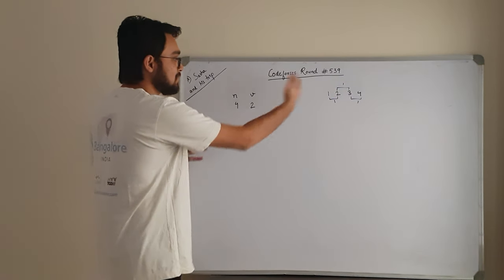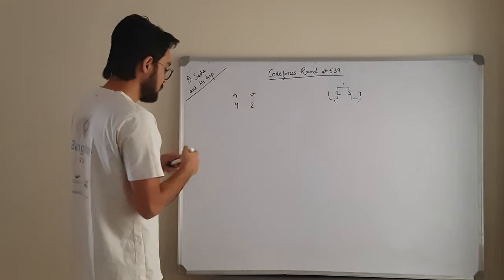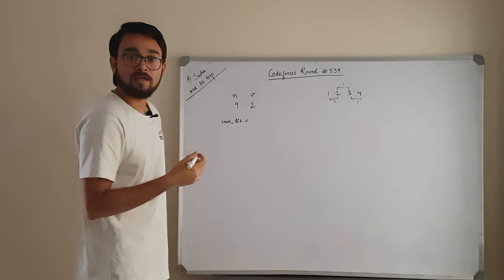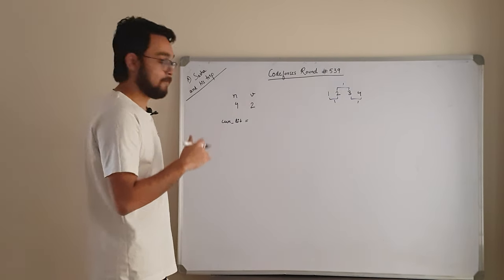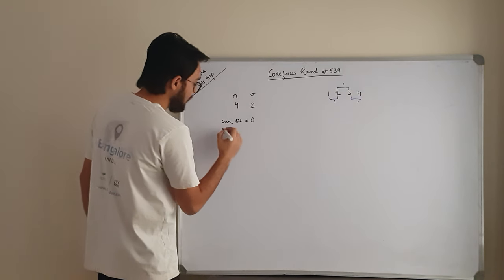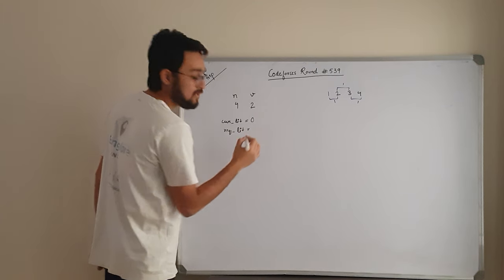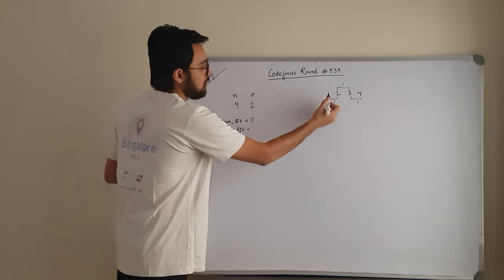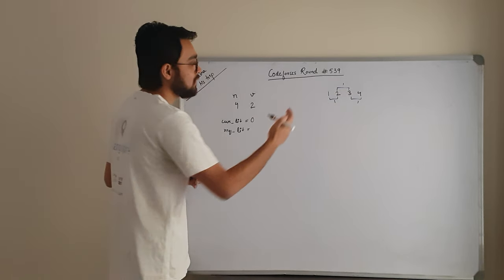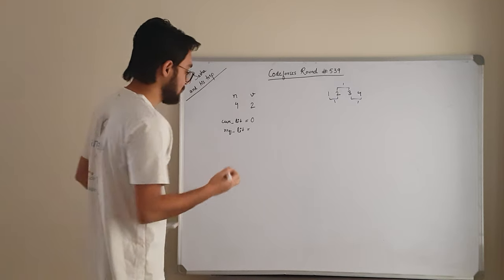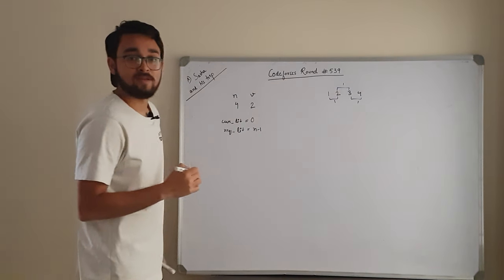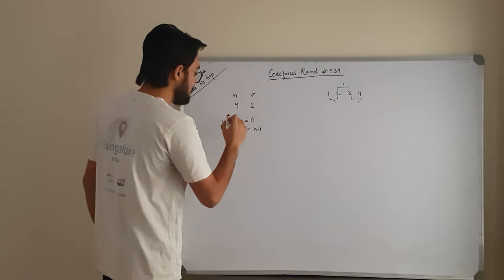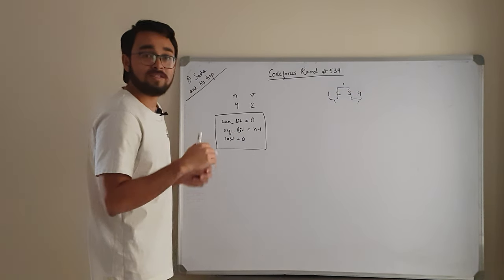We maintain a variable called current_liters — how many liters are in the vehicle right now — initialized to 0. We also track required_liters: the total liters needed to go from city 1 to city N, which is N minus 1. The cost variable is initialized to 0 as well. This completes the initialization.